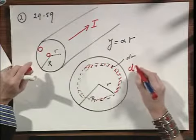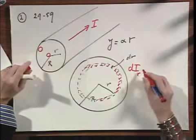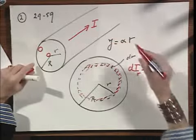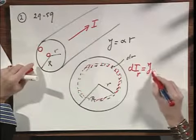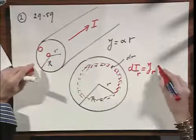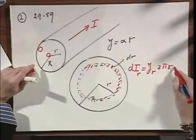Well, that current dI at that location r must be J at that location r times the surface area of the ring, which is 2πr dr.